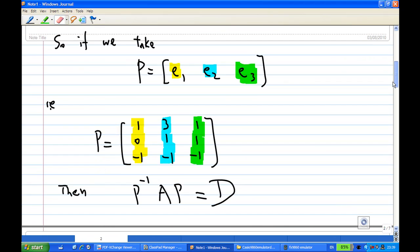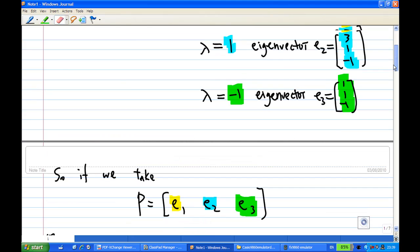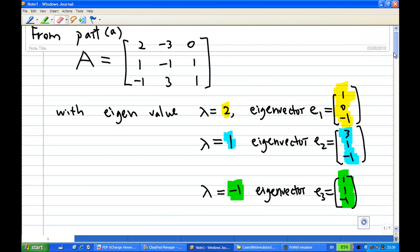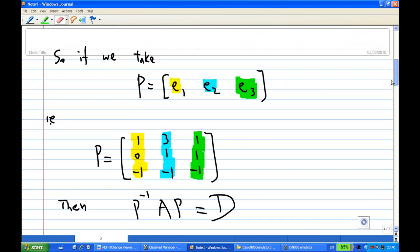So, E1, E2, E3 as above the eigenvector for different eigenvalue. So, let's call it P here. So, E1 is 1, 0, minus 1.